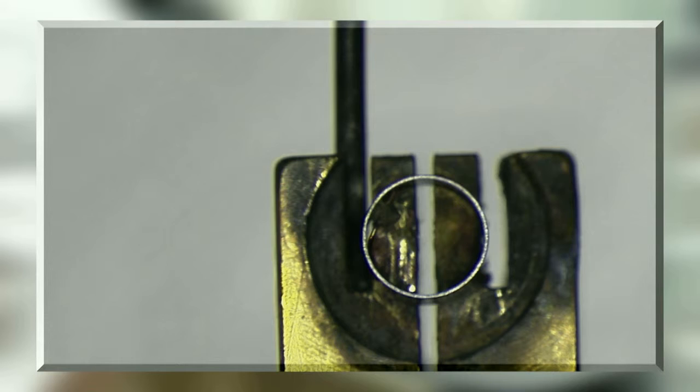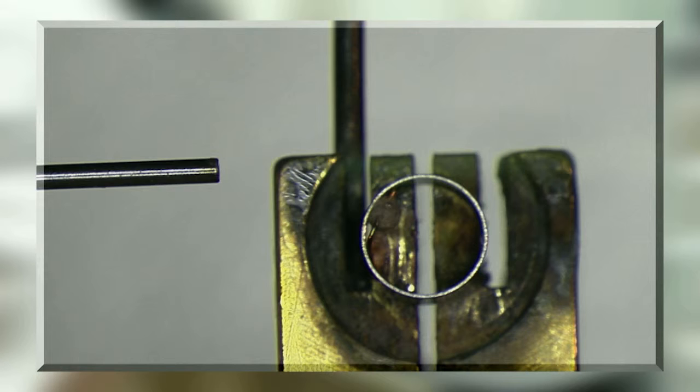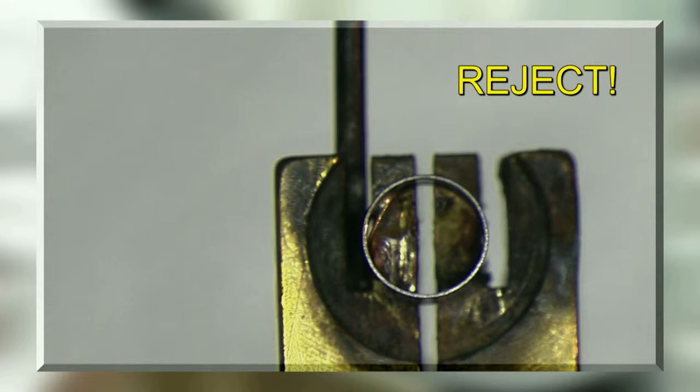Scrap the part if you see a gap between the wire and ring, even if the gap is filled with braze paste. The wire should be flat against the inside of the ring. Also reject if the wire tail is longer than approximately 5 millimeters.